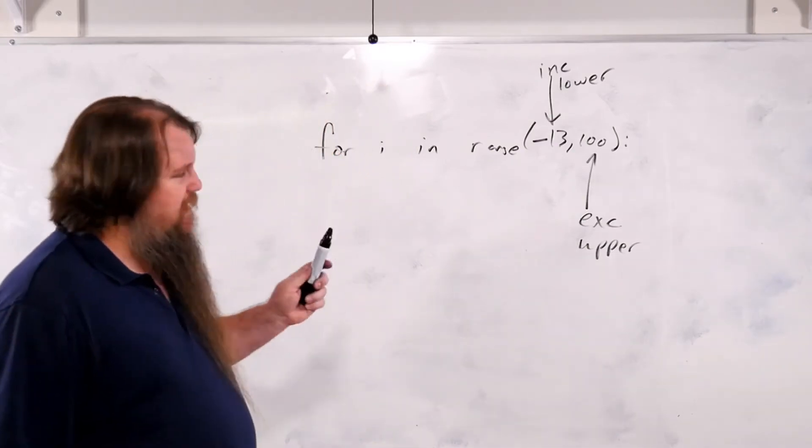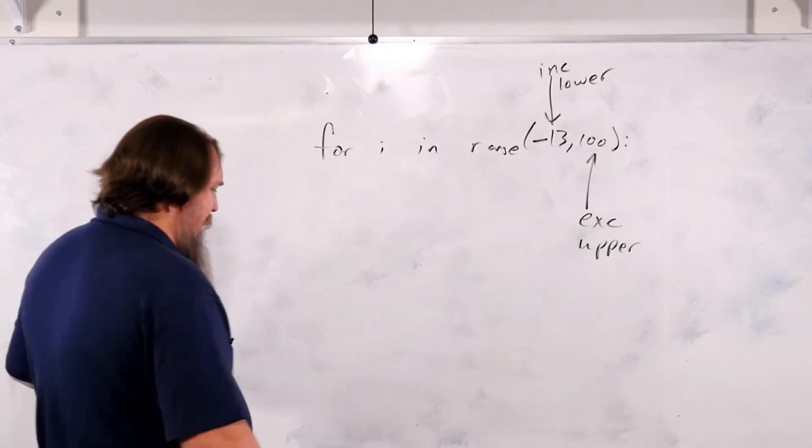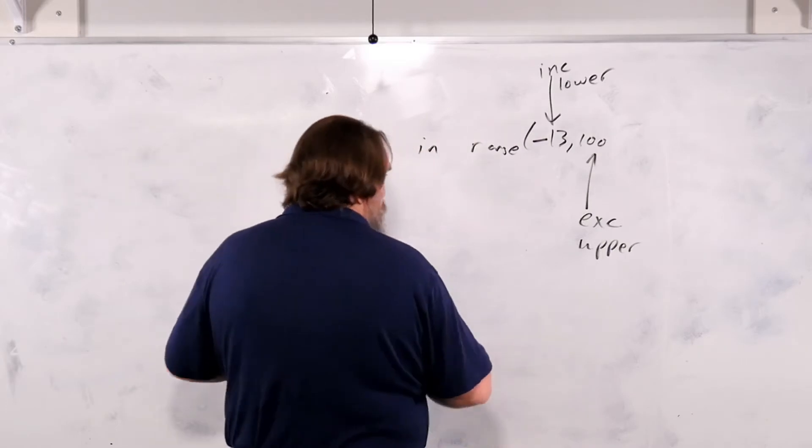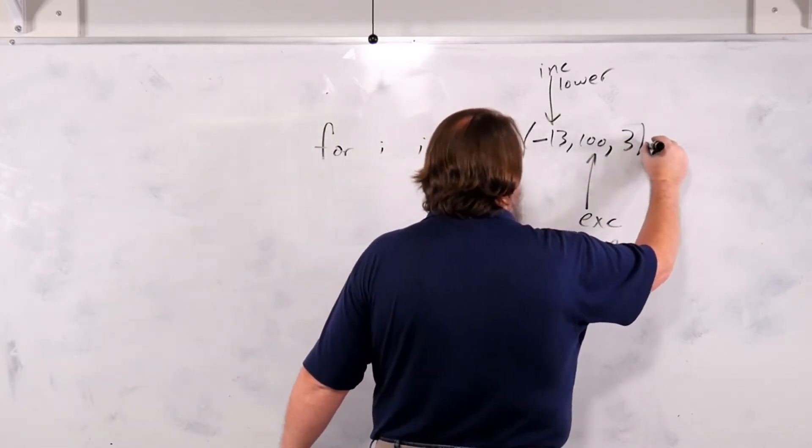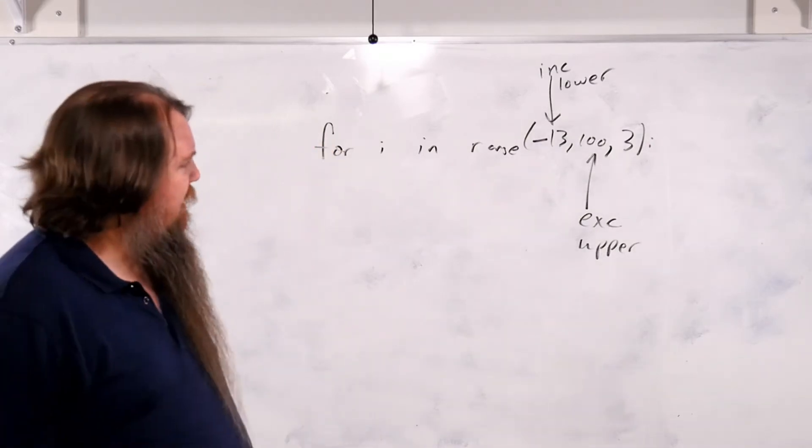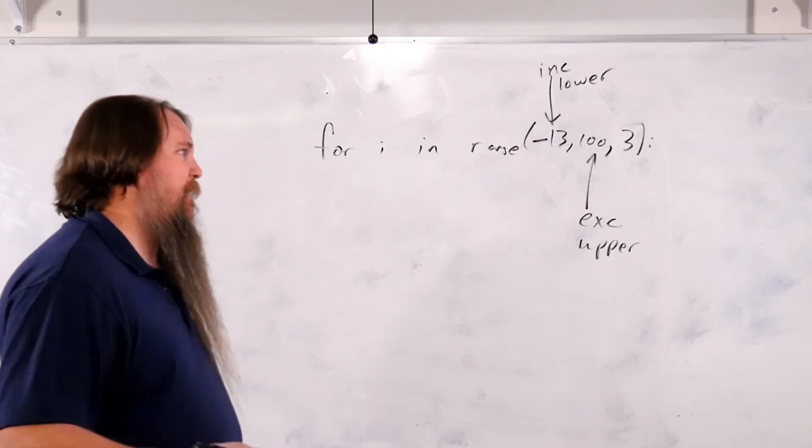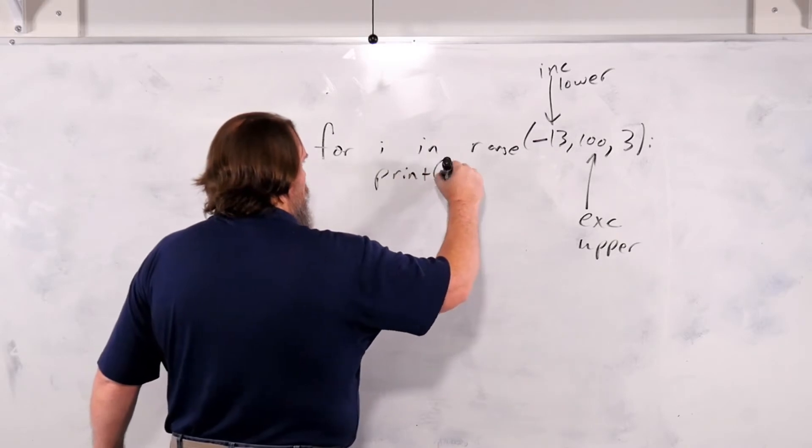Now, there is yet another form of range. And you could add what's called a step value. So let's add a step value of 3. Now what this step value is, is it's telling you how much you should advance every time. So let's go ahead and we'll put in print i.